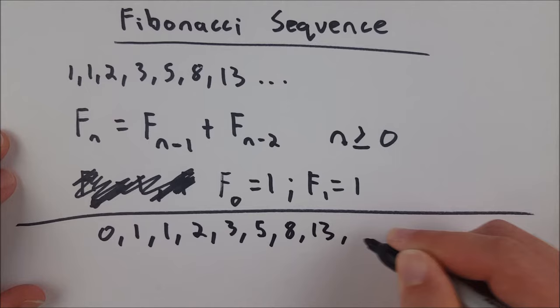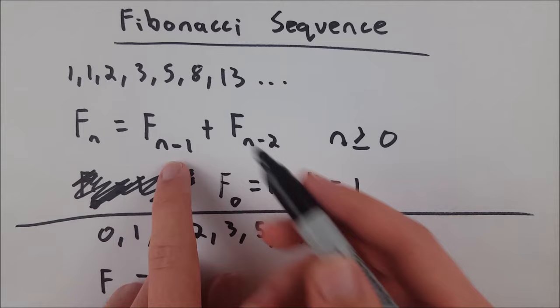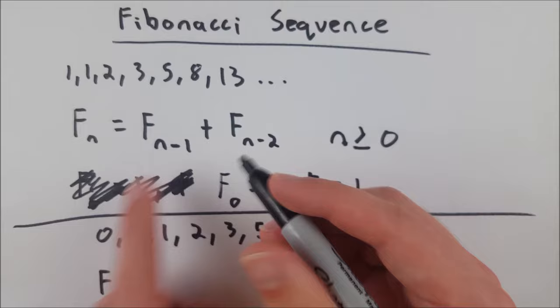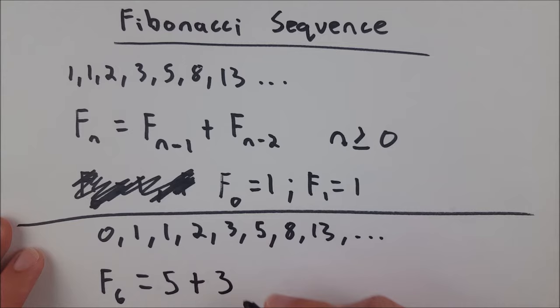And that's really all there is to it. Just to show you an example of using this recurrence relation, let's say we want to find out what the sixth Fibonacci number is. We'll take the fifth Fibonacci number, 6 minus 1 is 5. 1, 2, 3, 4, 5. That's 5. And add to it the fourth Fibonacci number, 6 minus 2 is 4. 1, 2, 3, 4. That's 3. So, the sixth Fibonacci number is 5 plus 3, which equals 8.